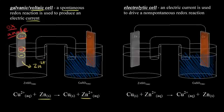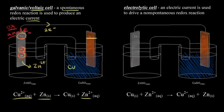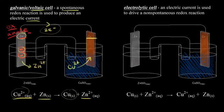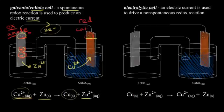The zinc electrode is our source of electrons, so this is our negative electrode, and those electrons move through the wire to produce an electric current. When those two electrons reach our copper electrode, we have copper two plus ions in solution. When those Cu²⁺ ions gain those two electrons, copper two plus turns into solid copper — that's reduction. Gain of electrons is reduction, so reduction occurs at our copper electrode, making it the cathode. Remember: 'red cat.' So the copper electrode must be our positive electrode.